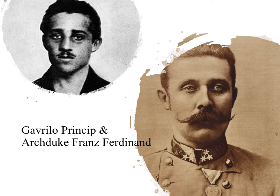He wanted to be free. He thought of himself as a freedom fighter. He and several others joined a group called the Black Hand. They considered themselves freedom fighters. They had been part of the Muslim Ottoman Empire; now they were part of the Austro-Hungarian Empire. And they didn't want to be part of that. So he was going to be the one who assassinated Franz Ferdinand — not because he cared about Franz Ferdinand, but because Franz Ferdinand represented imperial rule.